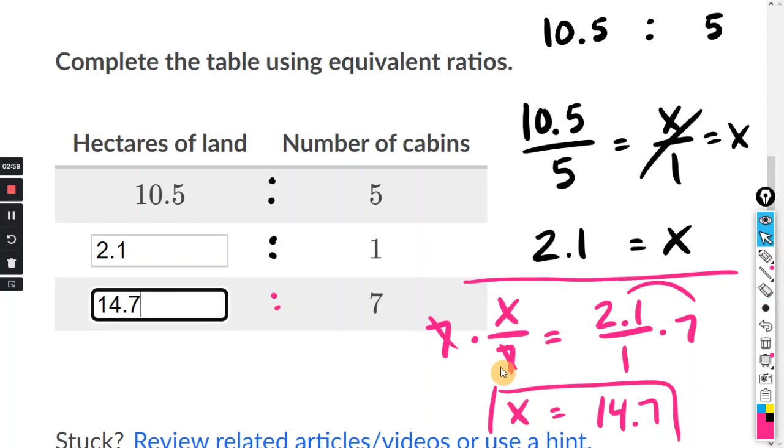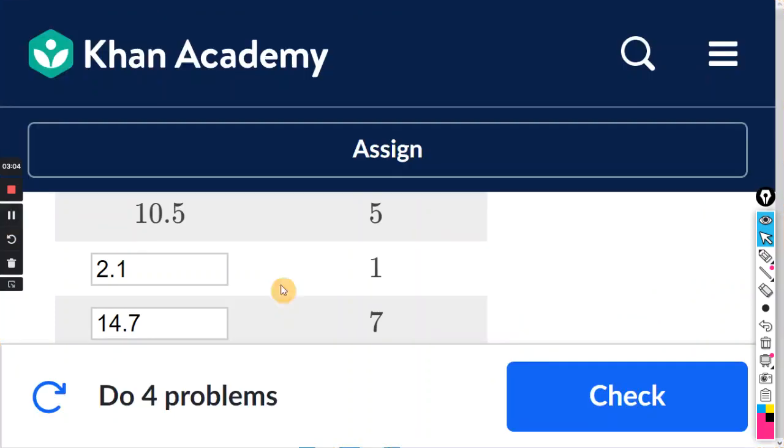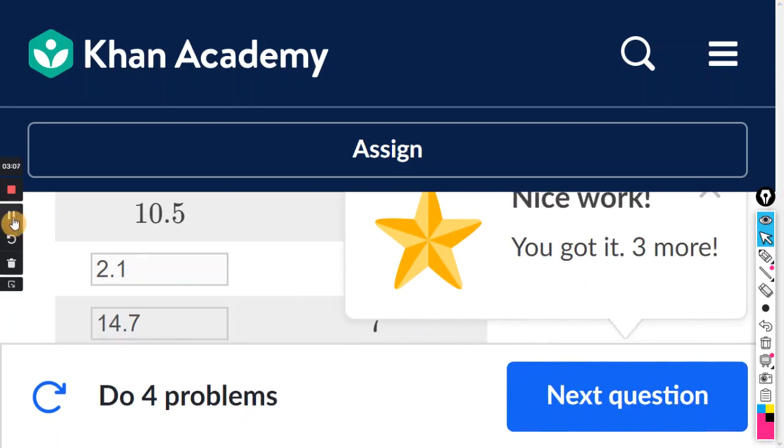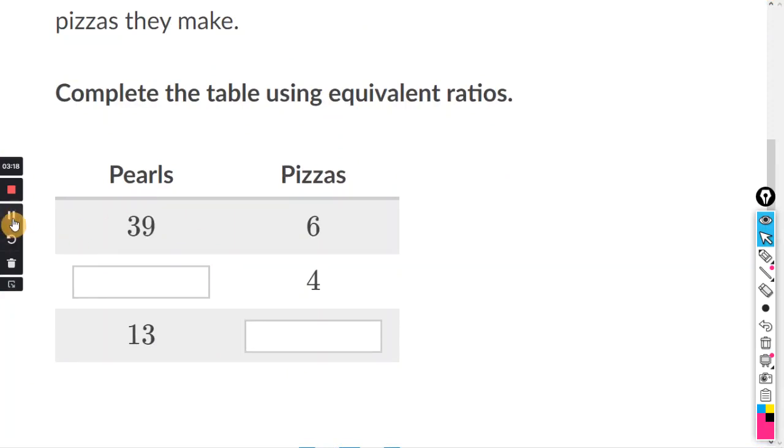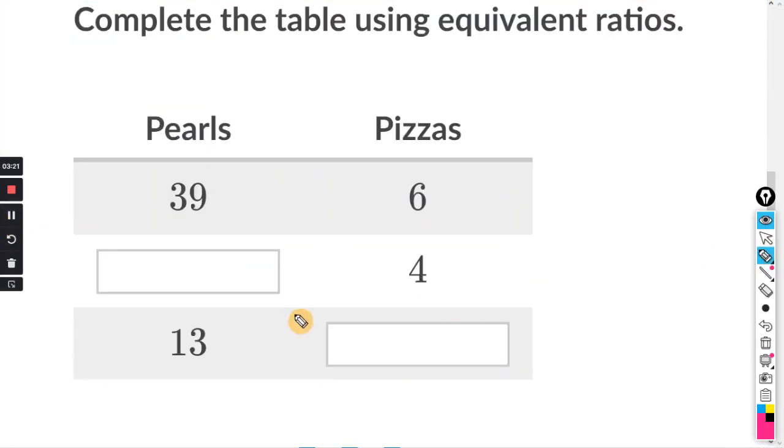You could have used cross multiplication as well. I'll show you that on another problem. Luigi uses 39 mozzarella pearls for every 6 pizzas they make. Complete the table using equivalent ratios. So same as last time, we'll let the blank space equal X. And I will do 39 divided by 6, and that's going to equal X divided by 4.